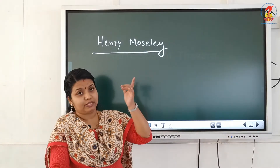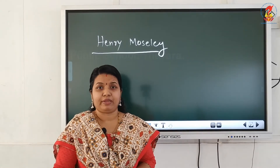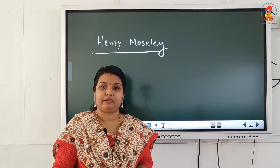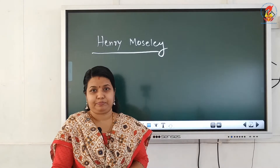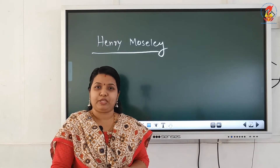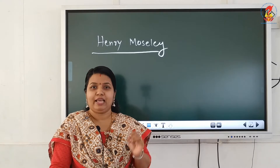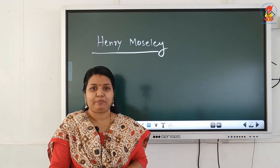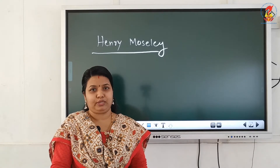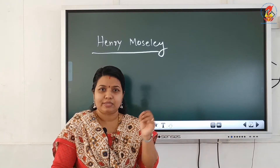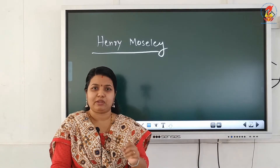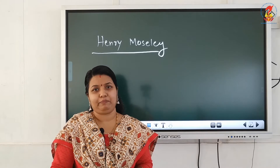Henry Moseley said that atomic number of an element is a more fundamental property than atomic mass. Accordingly, Mendeleev's Periodic Law was modified and we have the Modern Periodic Law. The statement of the law is almost the same — instead of atomic mass, we write atomic number.